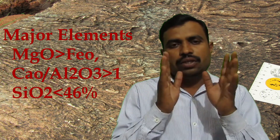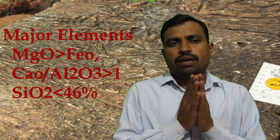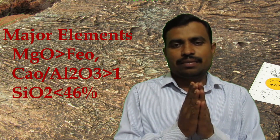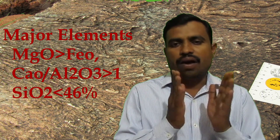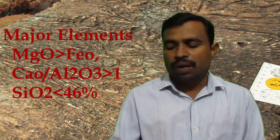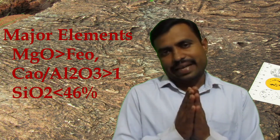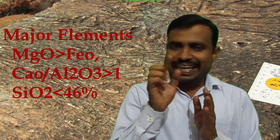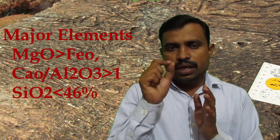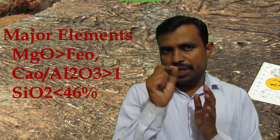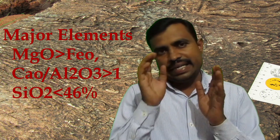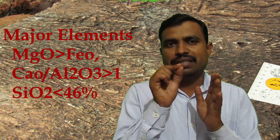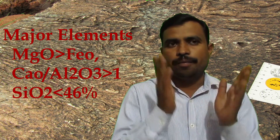Now we will see the geochemistry of this particular komatiite rock. The komatiite is composed of major elements, trace elements, rare earth elements, and other volatile elements also. Komatiites are characterized by a specific chemistry: MgO is greater than FeO, the CaO/Al2O3 ratio is always greater than 1, and SiO2 is less than 26%. These are the specific major element characteristics present in the komatiite.